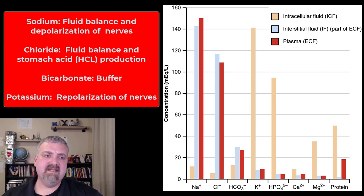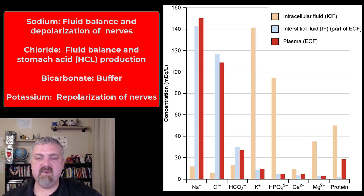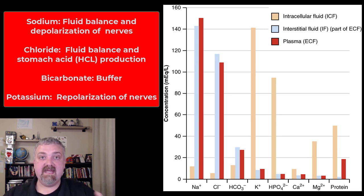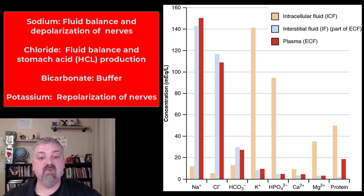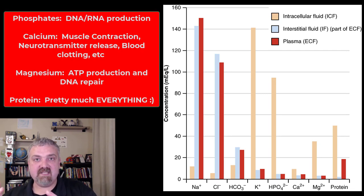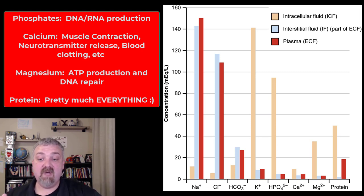Key functions — let's walk down the list. Sodium depolarizes nerves; that's its primary function, and it also plays a huge role in fluid balance. Chloride's primary function is fluid balance, but it also plays a role in the production of hydrochloric acid in the stomach. Bicarbonate — think the bicarbonate-carbonic acid buffer system, a super important buffer. Potassium's primary job is to repolarize your nerves: sodium turns your nerves on by depolarizing them, potassium turns them off by repolarizing them — both very important. Phosphates are the phosphorus source you need to make DNA and RNA, and you need lots of phosphates to make ATP as well.